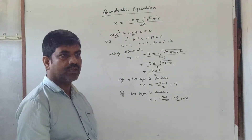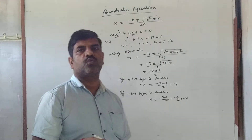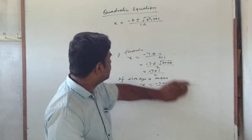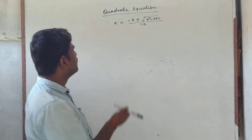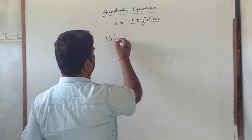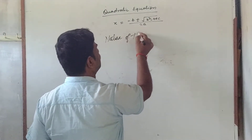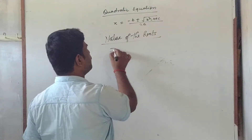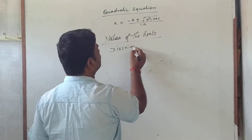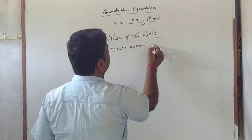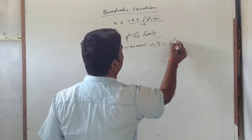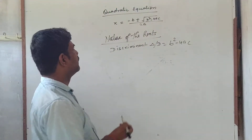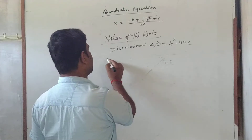Now, the next topic is how to predict the nature of the roots of the quadratic equation without solving it. To predict the nature of the roots, we need to find the discriminant of the quadratic equation. The discriminant, denoted delta or D, is equal to b² - 4ac — the value written inside the square root — and there will be three cases.